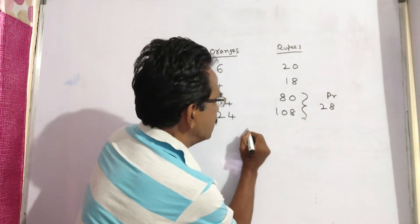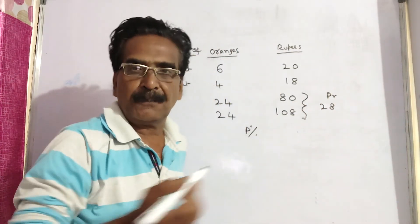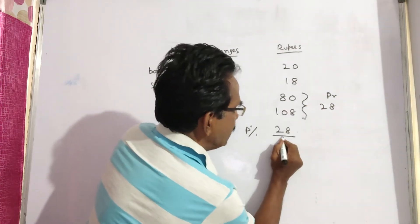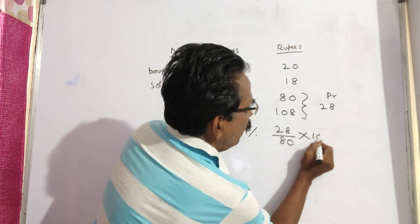Now profit percent equals profit by cost price into 100.